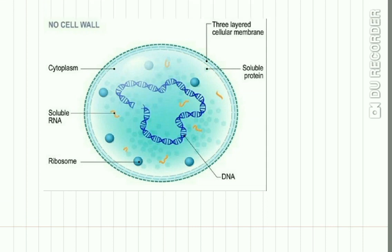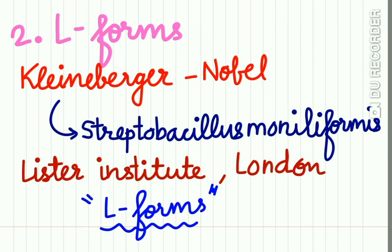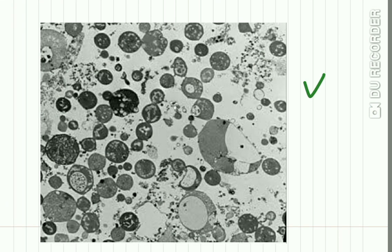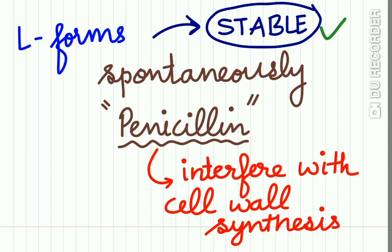Here is a diagram of mycoplasma showing no cell wall. The second type is L-forms. Cleanberger and Nobel demonstrated L-forms on the bacteria Streptobacillus moniliformis. Remember this MCQ: Streptobacillus moniliformis was first used to demonstrate L-forms, and this experiment was done at the Lister Institute, London — which is why they are called L-forms. L-forms are stable and may occur spontaneously or when bacteria are exposed to penicillin, which interferes with cell wall synthesis resulting in formation of L-forms.